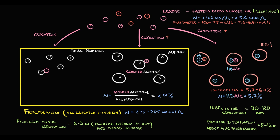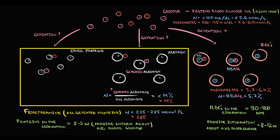The more albumin molecules become glycated, the higher becomes the ratio, and now the ratio becomes greater than 14%. Also, with increasing blood glucose level, the glycation of other proteins increases, and now fructosamine will be higher than 285.